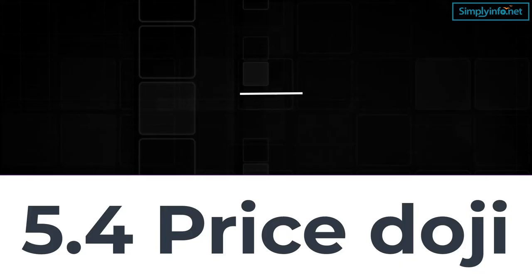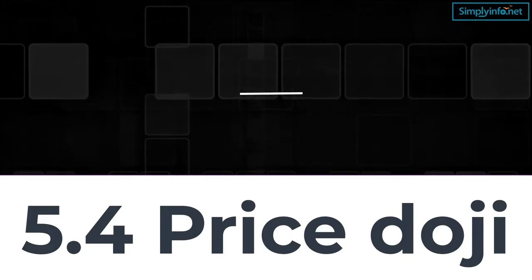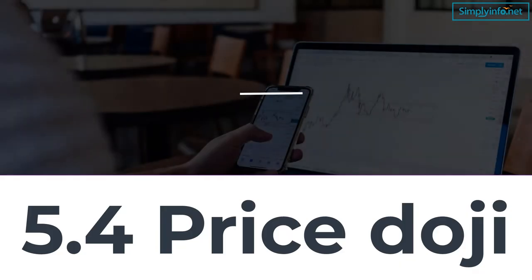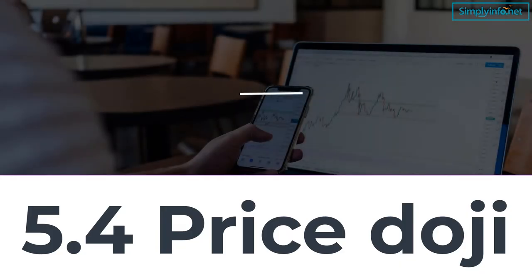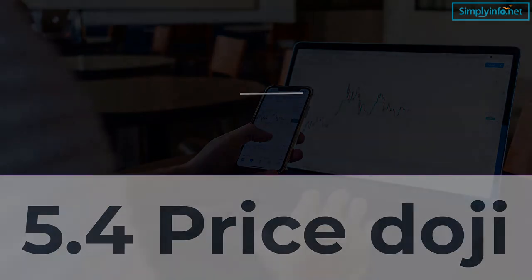5. Four-price doji: The four-price doji is a candlestick where the open, high, low and close are all the same. This candle reflects the highest extent of indecision between bulls and bears. It is normally seen on low trading volume and often appears in pre-market and after-hours trading.